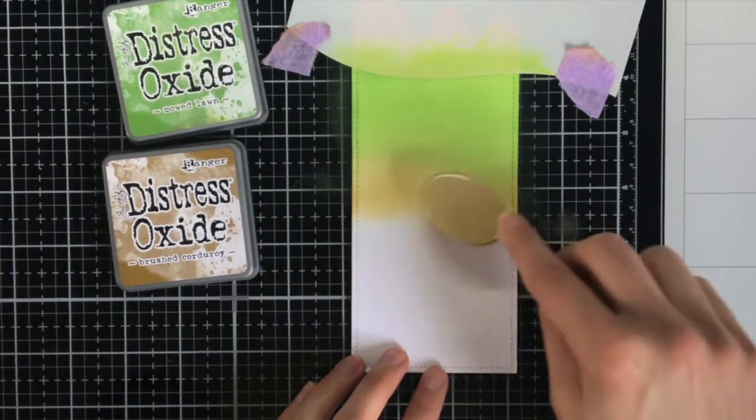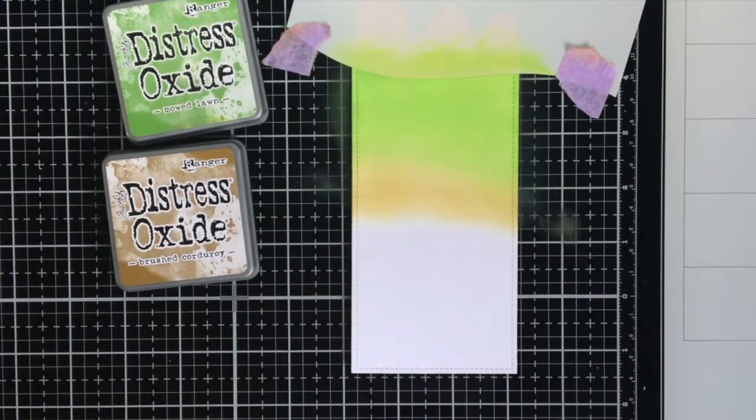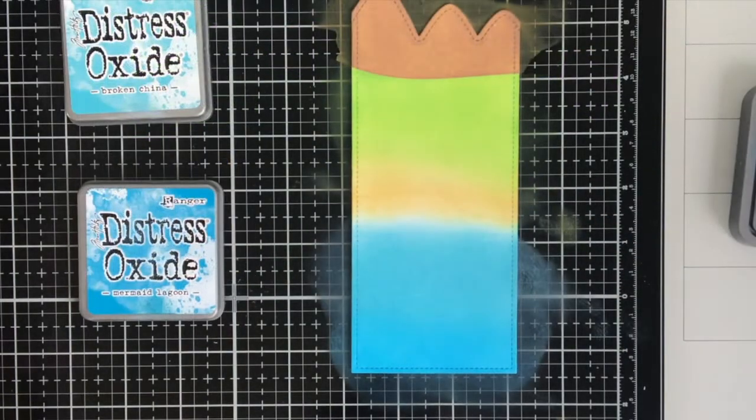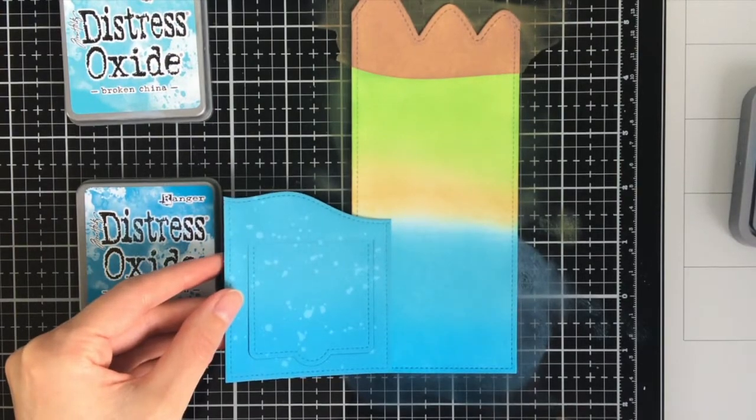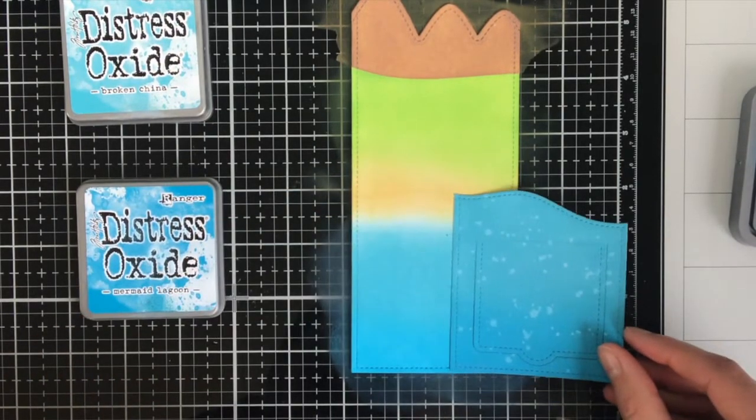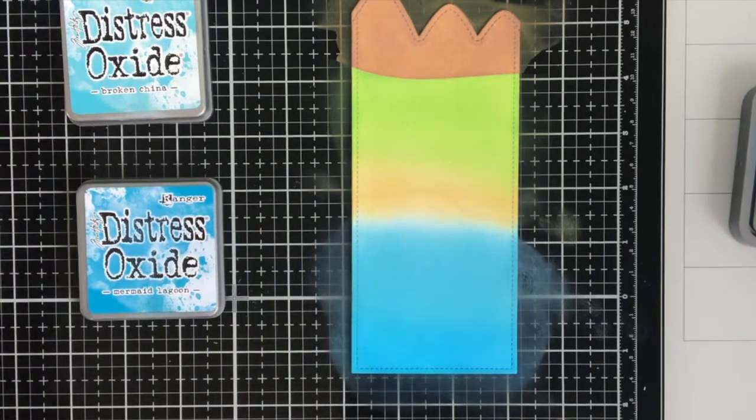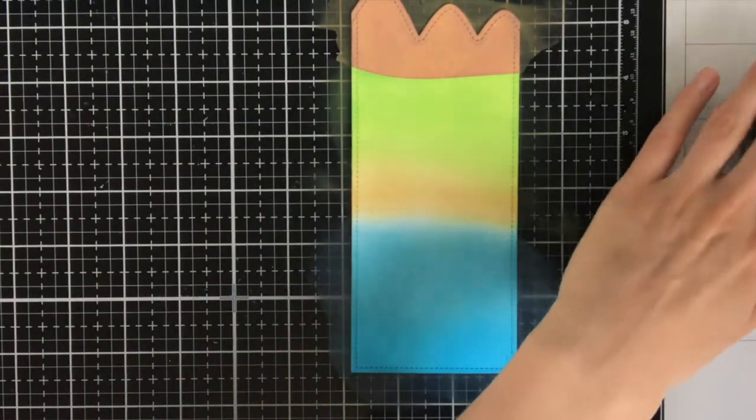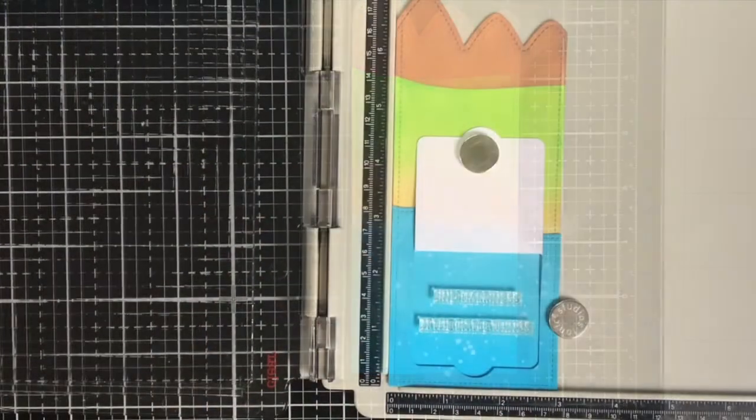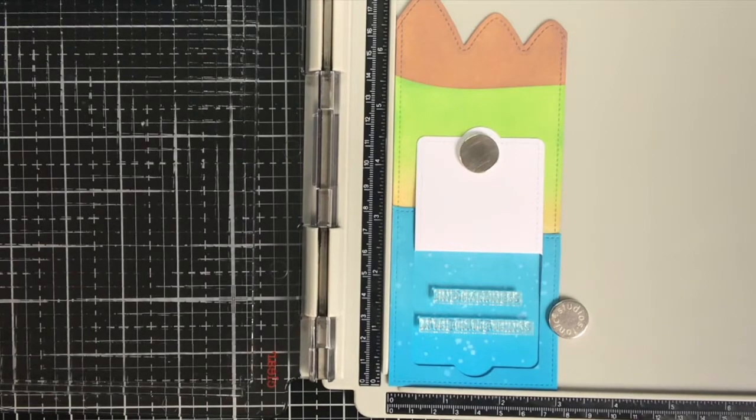So on the bottom of this card I'm going to use the lift the flap panel that I prepared earlier on. And because you can lift the flap I also wanted the background panel to have the same color as that lift the flap panel, so I used the exact same Distress Oxide inks for that.